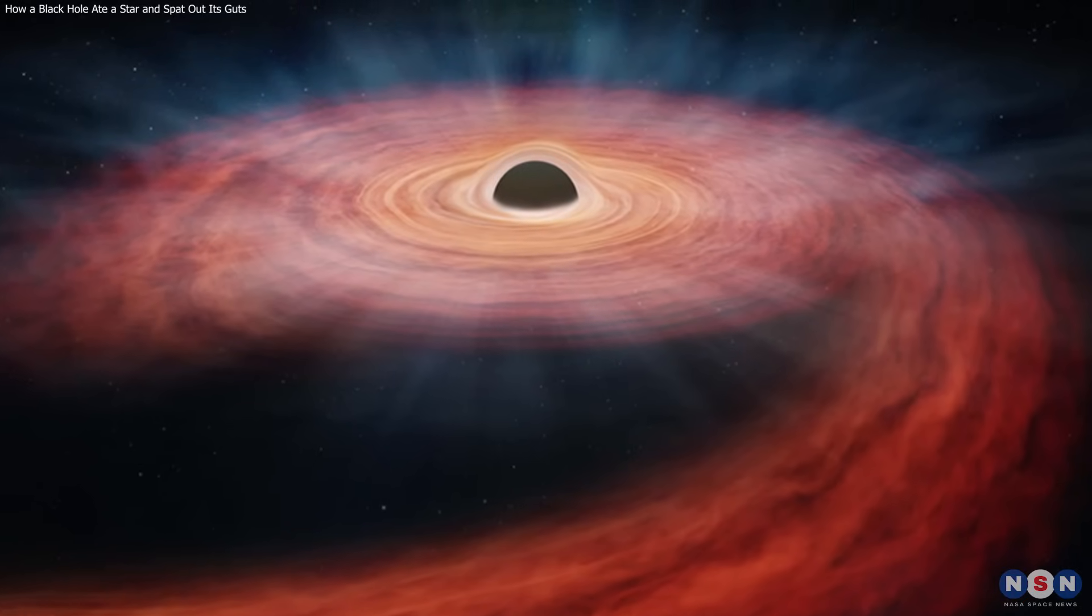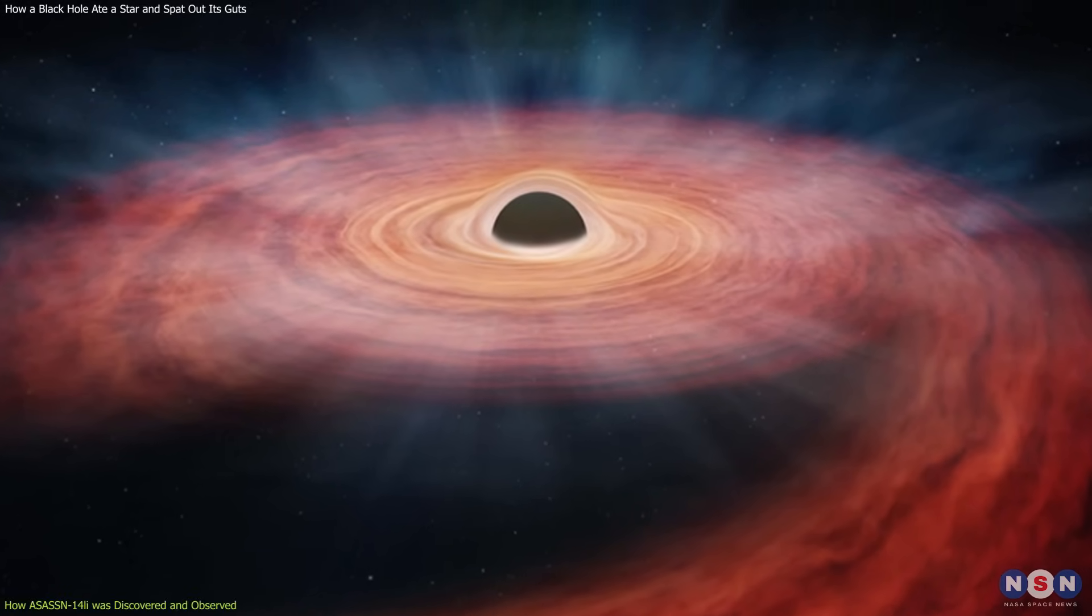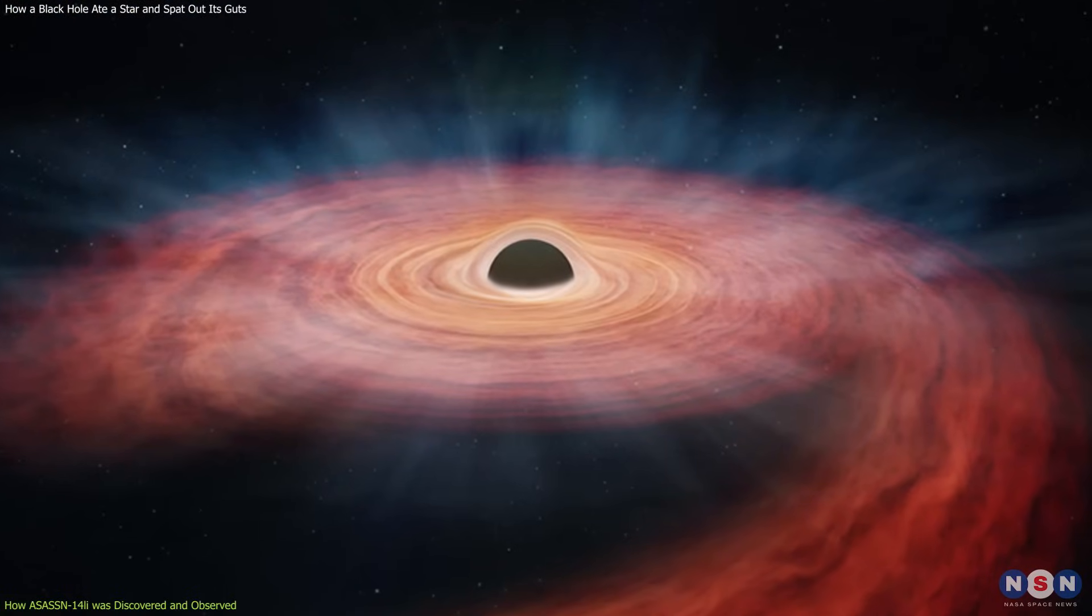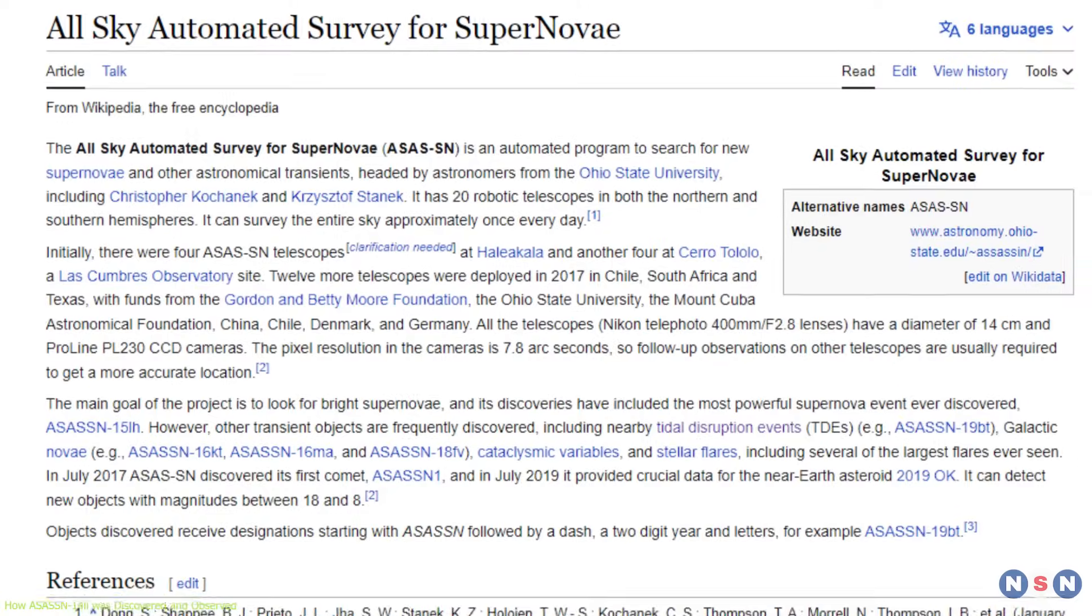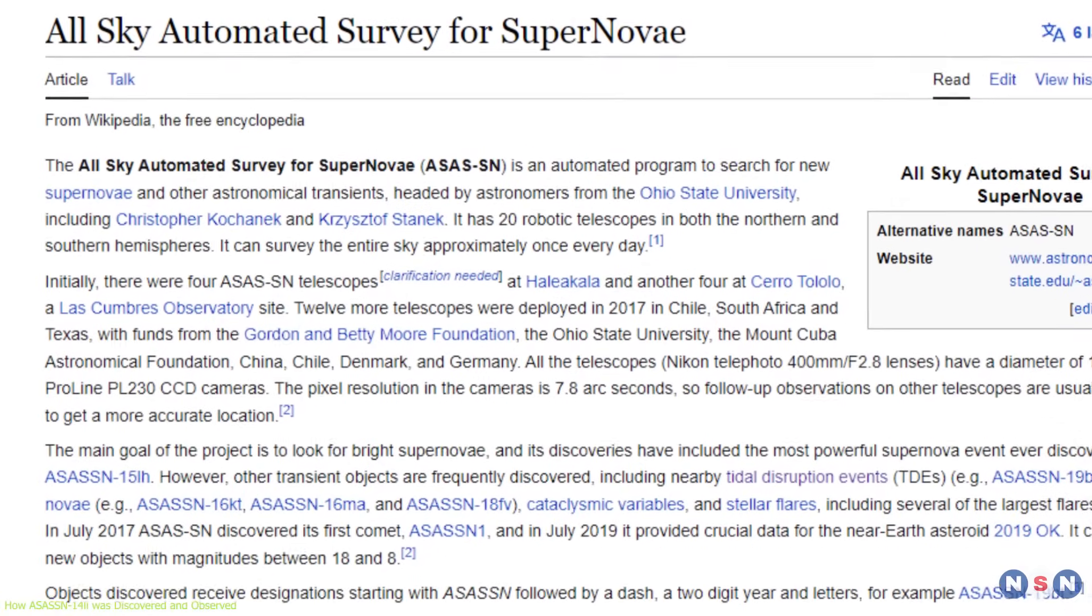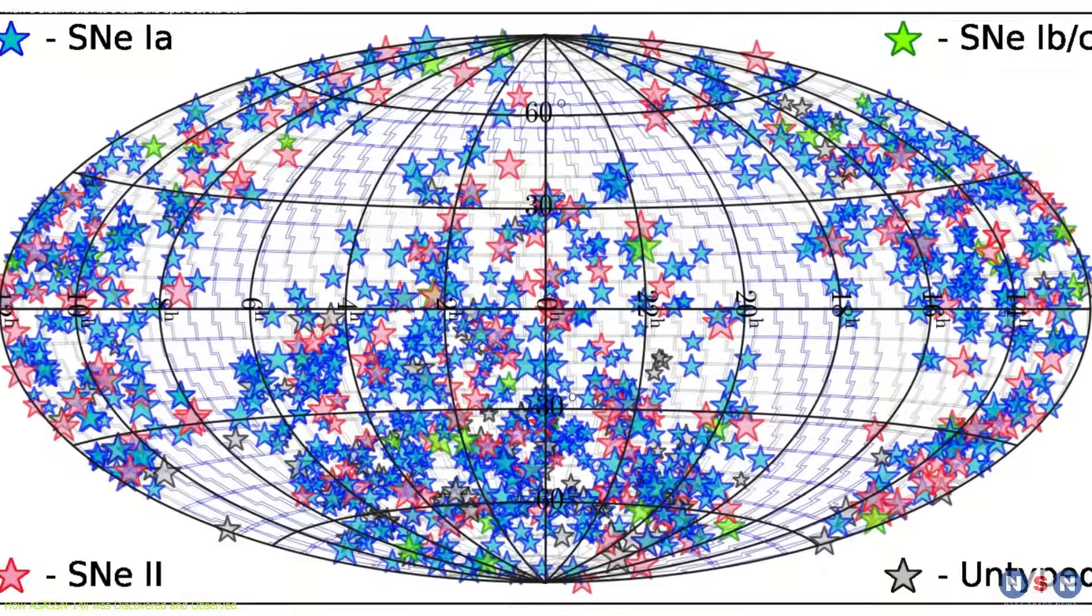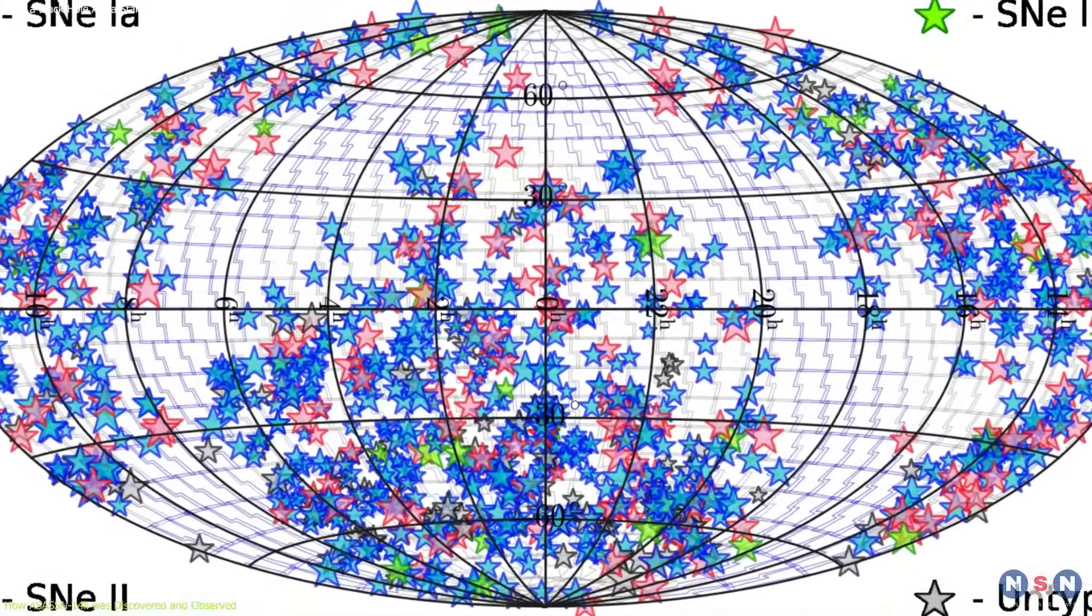One of the most remarkable examples of a TDE that has been observed so far is ASASN-14Li. This event was discovered in November 2014 by the All-Sky Automated Survey for Supernovae, ASASN, which is a network of telescopes that scans the sky for bright flashes of light from exploding stars or other sources.